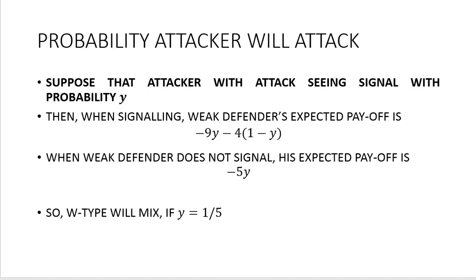Now suppose attacker will attack upon seeing a signal with probability y. If weak defender signals, the expected payoff from signaling is: -9 times y (payoff when attacker invades and defender signals) plus -4 times (1 - y) (just the signaling cost when attacker does not invade). When weak defender does not signal, expected payoff is -5 times y. Weak defender will mix strategies if the probability of invasion under signaling y equals 1/5.